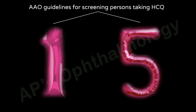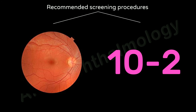Baseline screening is done within the first year of starting treatment and annually after the first 5 years. The annual screening can start sooner in patients with additional risk factors. The recommended screening procedures include an ocular examination and an automated visual field. A dilated retinal examination is important not for screening but for detection of associated retinal disorders.